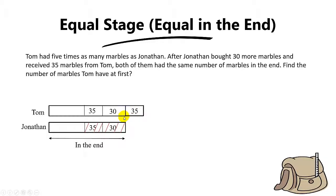Let me explain one more time. Because the question says Jonathan received 35 marbles from Tom, you need to give back these 35 marbles to Tom to find the marbles that each of them had at first. So this 35 here — you must shade this part, and from here you must extend by another 35.